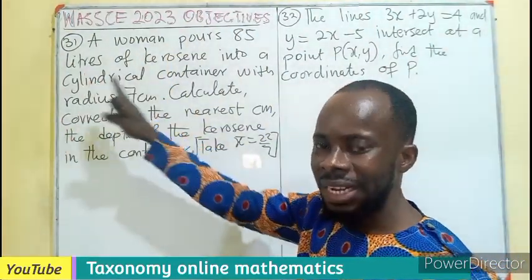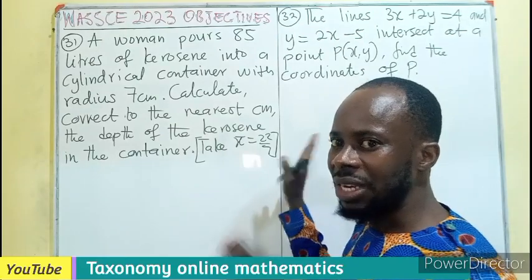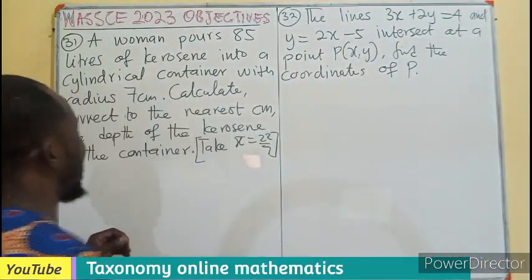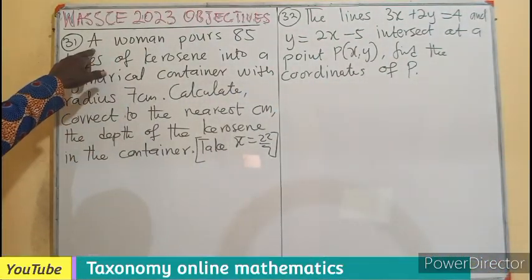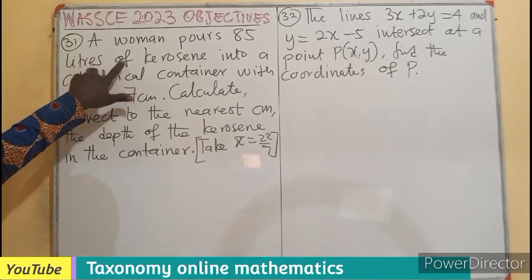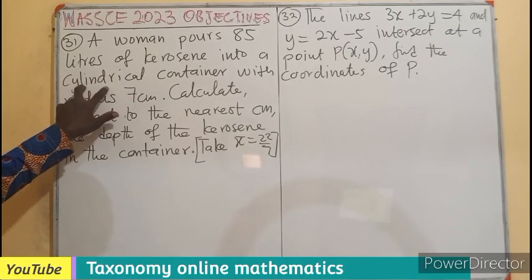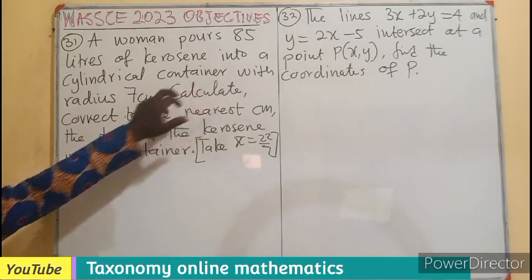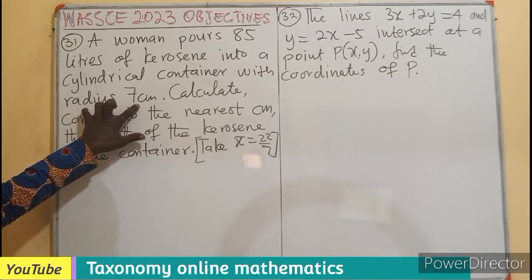Question number 31 to 35 will be in this episode. The first one is asking: a woman pours 85 liters of kerosene into a cylindrical container with the radius being 7 cm.